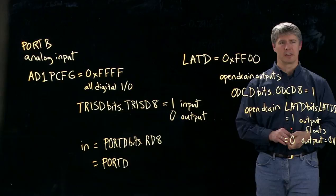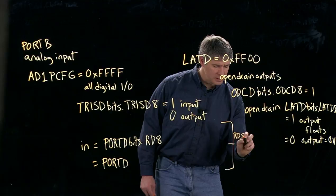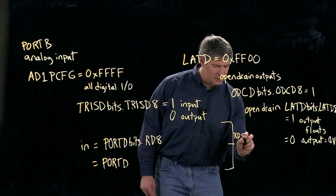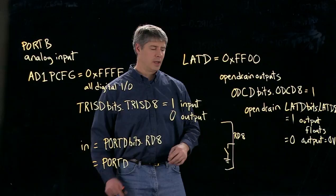Let's explain now what open drain means. Open drain means that if this is the PIC here, and here's the output, so we'll call this RD8, then internally it's configured as a switch to ground. So that means if we write a 0 to this open drain output, then we close the switch and the output is going to be ground.